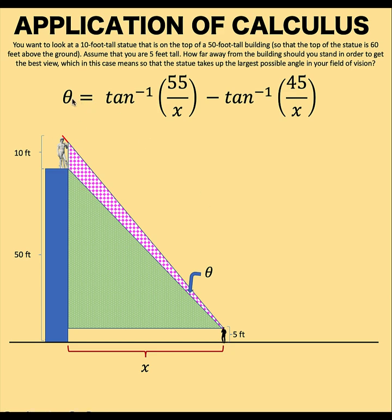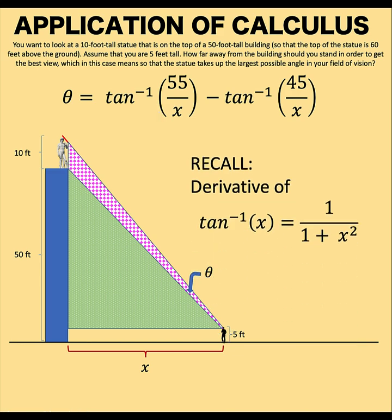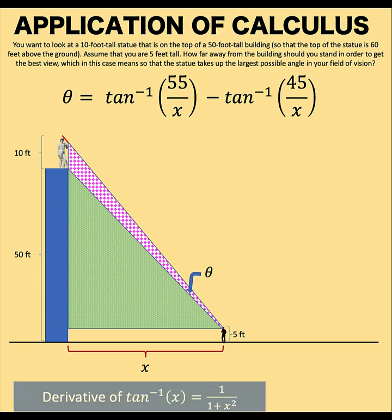So therefore, if we want to maximize this angle, we can use the first derivative of theta. Now, let's recall that the derivative of inverse tangent of x is equal to 1 over 1 plus x squared. And we are going to use this in order to compute the derivative of this equation.